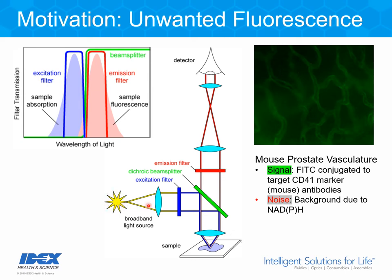In the schematic of the microscope shown here, we have a light source passing through some optics, then through an excitation filter, reflecting off a dichroic beam splitter, focused down onto a sample. The sample fluoresces, the objective collects light, passes it through the dichroic beam splitter, and the fluorescence then passes through the emission filter, through some optics, and onto a detector. The image shown here is a sample from fluorescence microscopy of mouse prostate vasculature. The signal is produced by a fluorescein dye that tags mouse antibodies. There is enzyme activity, and NADPH, which is actually fluorescent and involved in that enzyme activity, produces a background that reduces signal to noise.